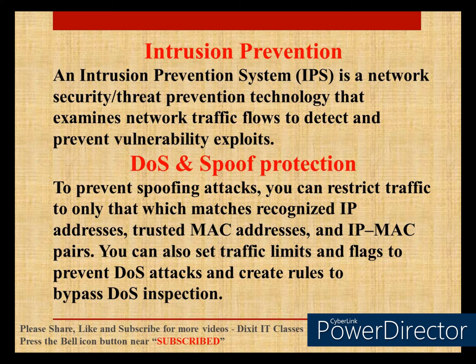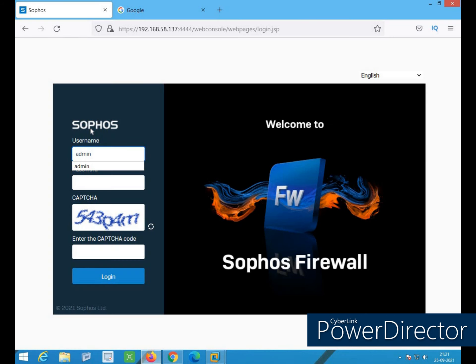Suppose there is a rule where you have a particular network that you want to bypass from DOS inspection. If you have intrusion prevention enabled, some network traffic could get blocked or dropped by the firewall. For that, there is a bypass DOS inspection rule — if you define the source and destination network, that traffic will not be included in DOS inspection and will be bypassed directly. Now I've logged into the firewall.